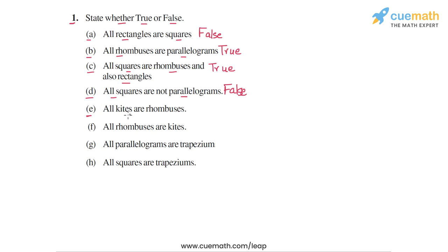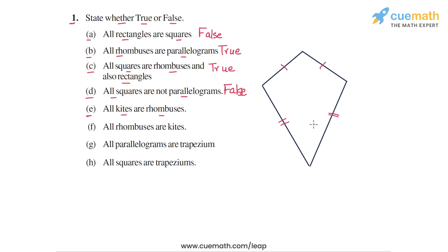Statement E says: all kites are rhombuses. A kite is a quadrilateral in which one pair of adjacent sides are equal and the other pair of adjacent sides are also equal, but all four sides may not be equal to each other. So all kites cannot be rhombuses, because a rhombus requires all four sides to be equal, and a kite may not even be a parallelogram. Statement E is false.